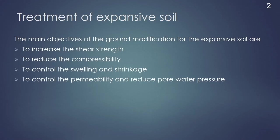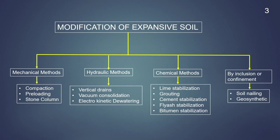As I explained before, there are four main objectives of any ground modification: to increase the shear strength, to reduce the compressibility, to control the swelling and shrinkage behaviour, and to control the permeability and reduce the pore water pressure. All these objectives have to be achieved using the four techniques of ground modification. In the previous classes, we learned about the various mechanical methods, hydraulic methods, and chemical methods.